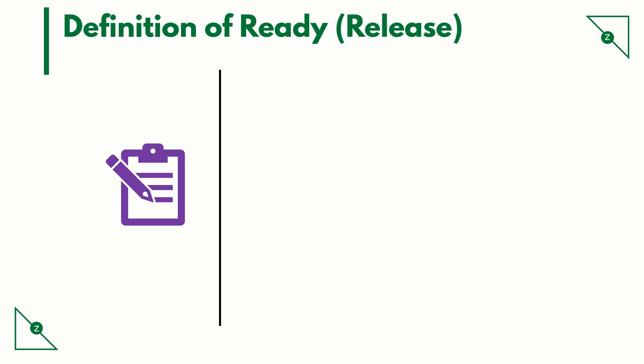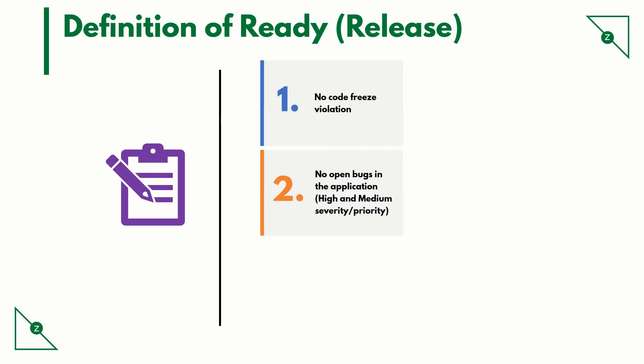Here are some example pointers for definition of ready for a release. No code freeze violation — that is, no code has been checked in by the developers during the code freeze duration without the approval of the approvers or the knowledge of the QA. No open bugs in the application. The amount of bugs allowed in every severity or bucket can be predefined.